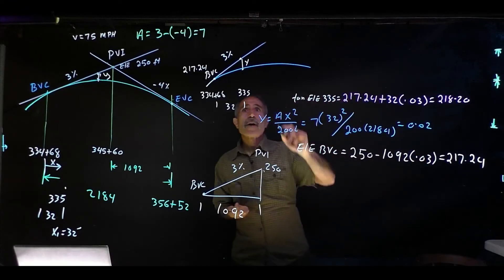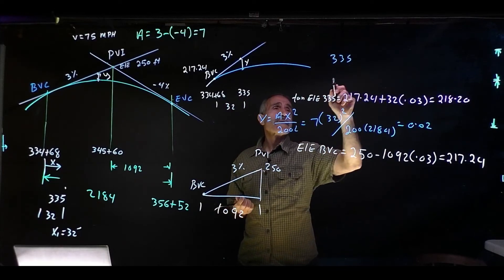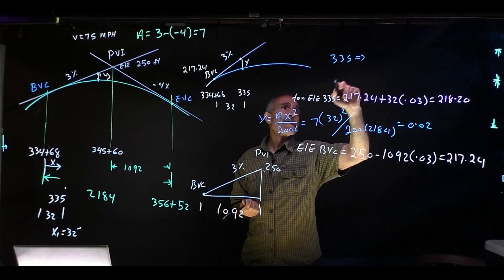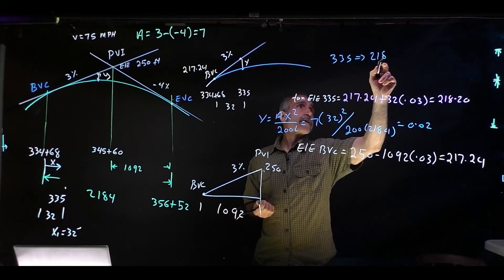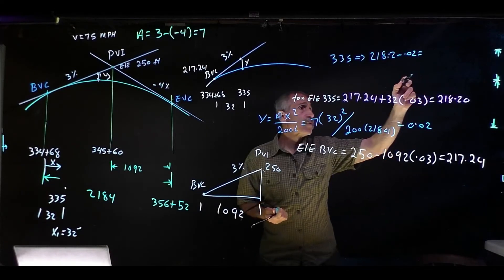And that becomes 0.02. And now the elevation on this curve right here, 335 curve elevation is going to be 218.2 minus 0.02, which is 218.18.